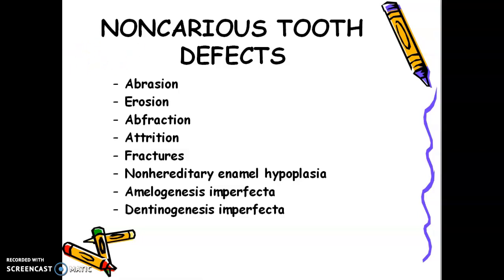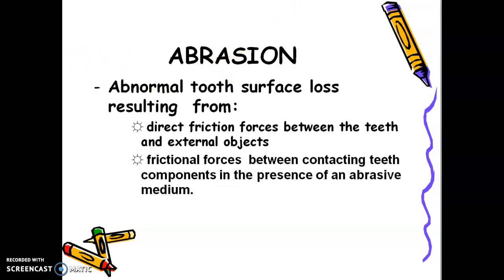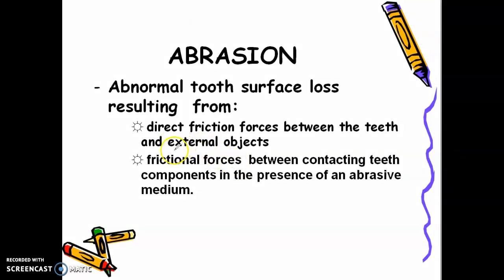Abrasion. What is abrasion? Abrasion is an abnormal tooth surface loss resulting from direct friction forces between teeth and an external object. Always remember that in abrasion, there should be an external object — for example, a toothbrush, toothpick, tobacco, or pipe stem. Abrasion happens because of frictional forces between contacting tooth components in the presence of an abrasive medium.